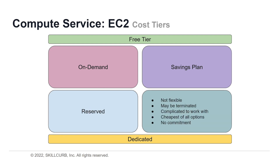Lastly, we have spot instances in AWS. Spot instances allow you to request spare Amazon EC2 computing capacity for up to 90% off the on-demand price — essentially requesting unused resources that AWS isn't currently using. However, there are significant catches: these instances are not flexible, may be terminated at any time with very short notice, and are extremely difficult to work with. Though it is the cheapest option with no commitment, it's still tricky. It's only recommended for users with urgent large-scale computing needs, applications with flexible start and end times, or workloads only feasible at very low compute prices.